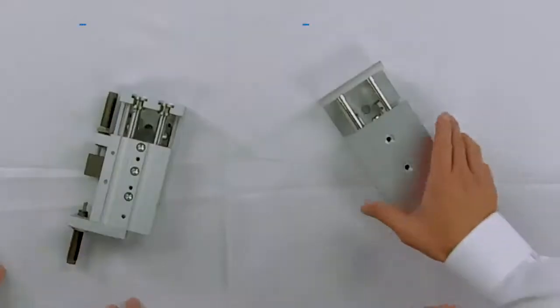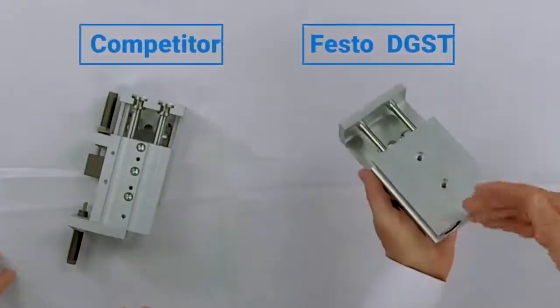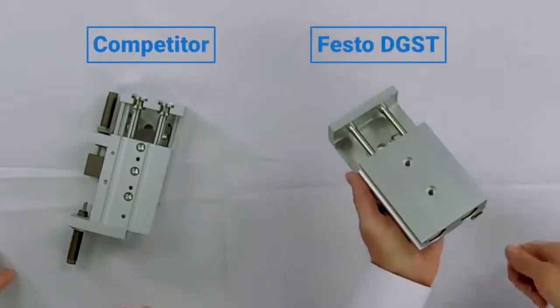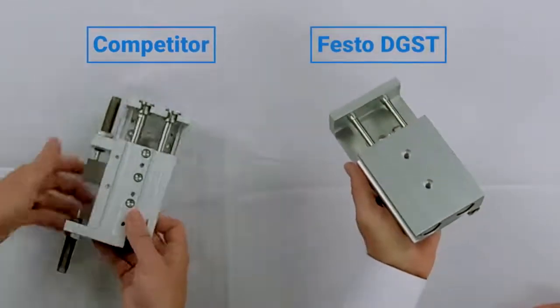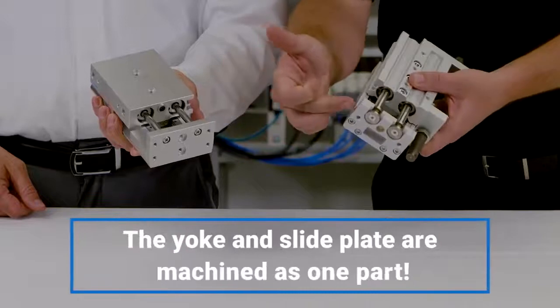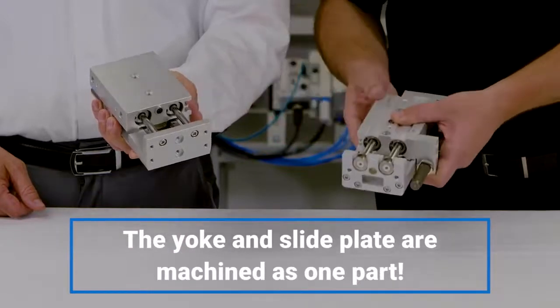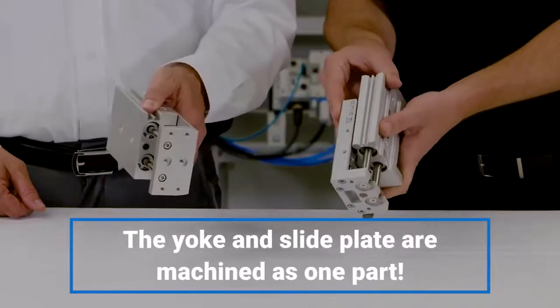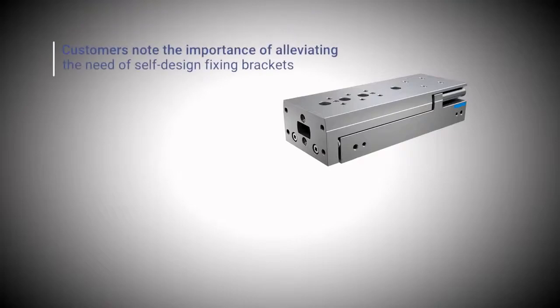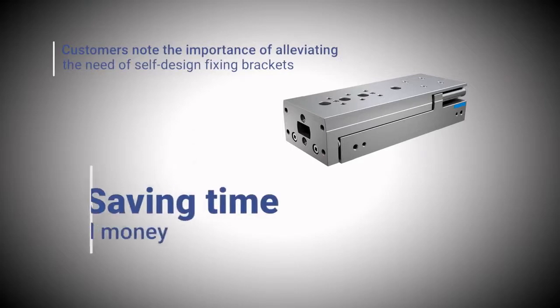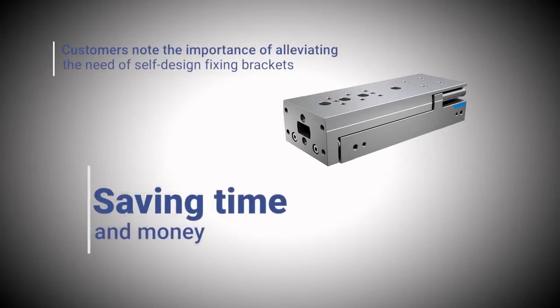Unique to the DGST in the slide market is the yoke and slide plate are machined as one part. This provides the highest degree of precision and perpendicularity in all directions between the yoke and the slide plate. Customers we've spoken with note the importance of this feature, alleviating the need for self-designed fixing brackets to achieve accuracy. This saves them time and money.